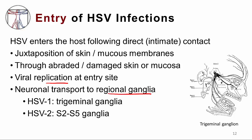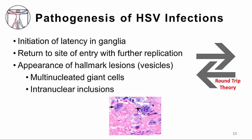HSV-1 is transmitted to the trigeminal ganglia, as depicted on the schematic. HSV-2 is transmitted to the sacral ganglia. After the virus gets to the ganglia, it begins to establish latency. It then returns back along the neuronal pathways to the initial site of inoculation, replicates further, and a visible lesion — a vesicle — erupts at the surface, on the skin or on the mucosa.